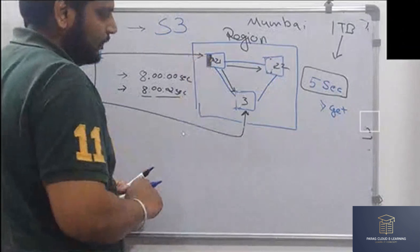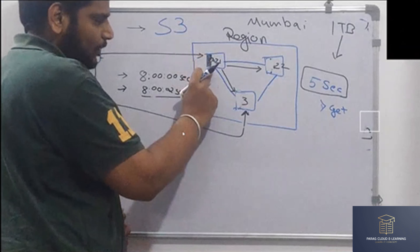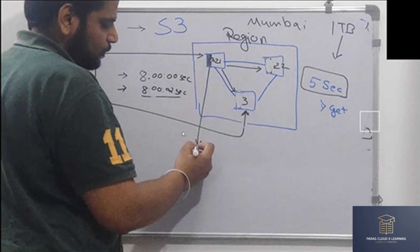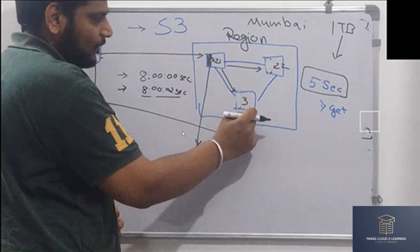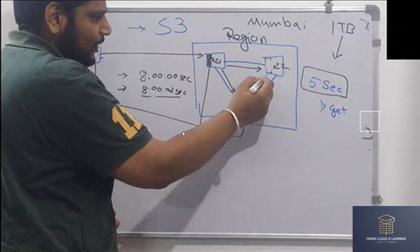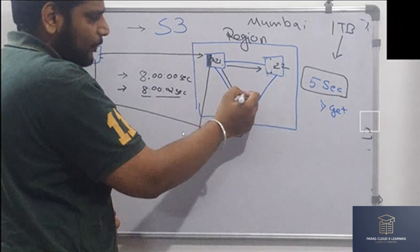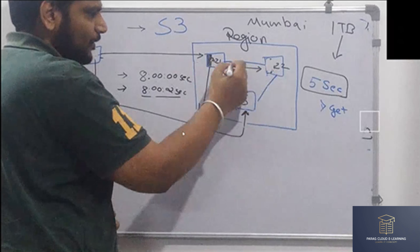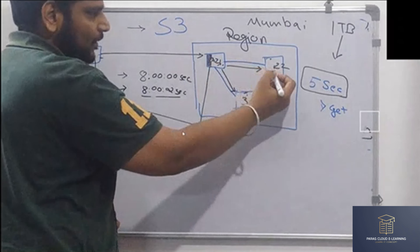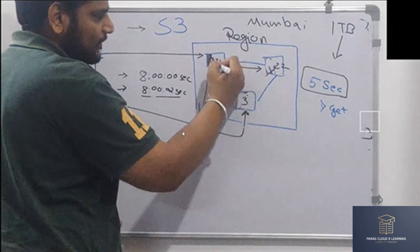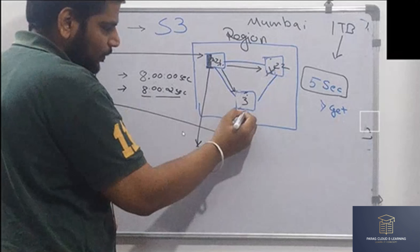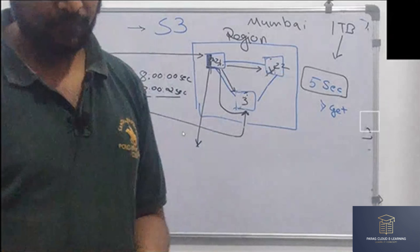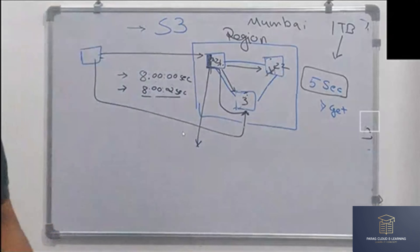What does Amazon do in this case? If your request has landed in the availability zone where the file was uploaded, you will get the file back. But if your request landed in another zone, Amazon will check if the file is available in another zone. It will cross-verify: if the file is not there, it will check the next zone, find it there, reroute your request, and the file will be downloaded. Amazon will verify in another availability zone as well.